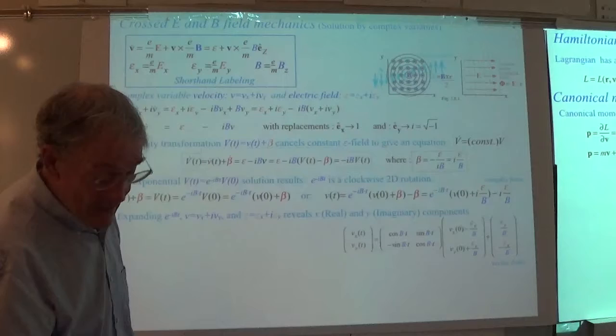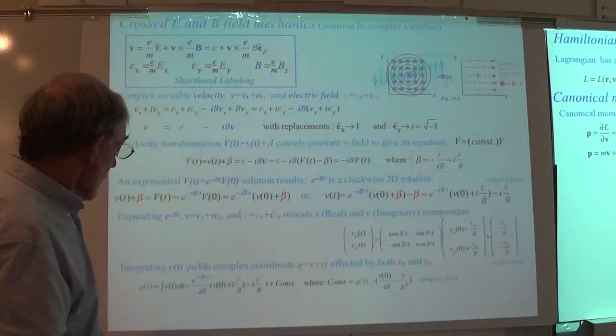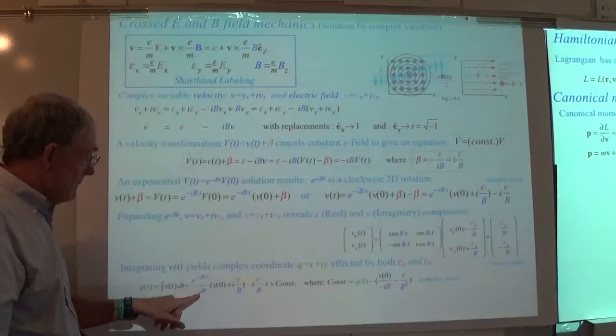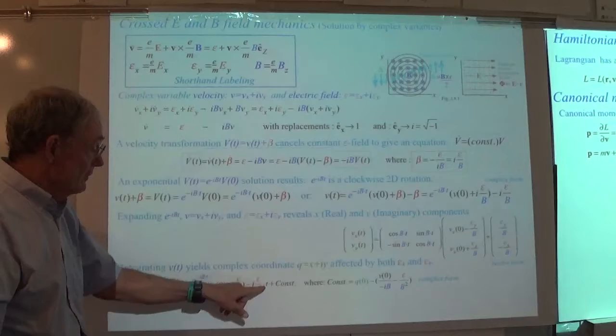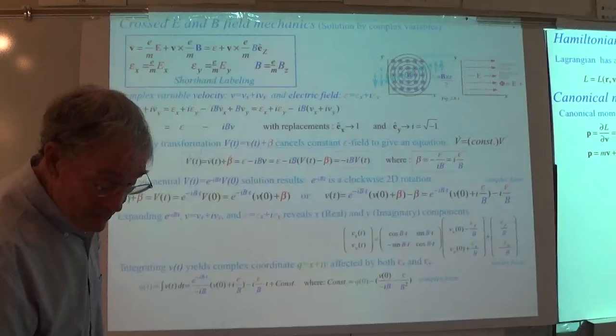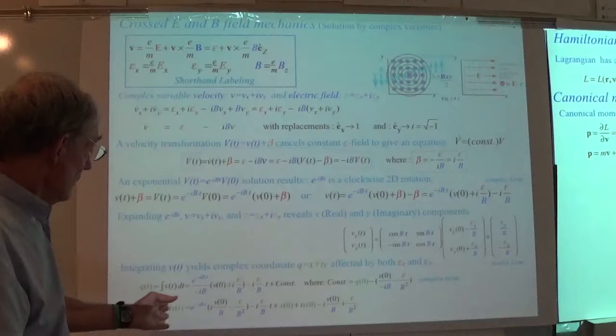Here's the matrix expression for the actual position — we've got a rotation with a minus sign, so I have the minus on the lower left corner, rotating everything. Plus extra terms involving E/B, plus the initial velocity times time plus initial position — that's the vector form.